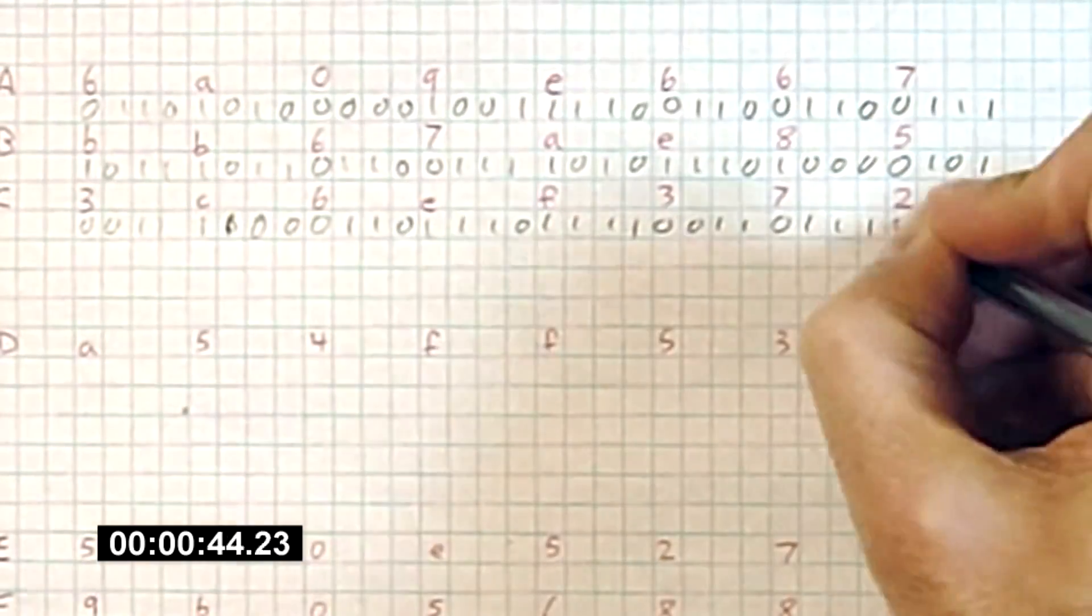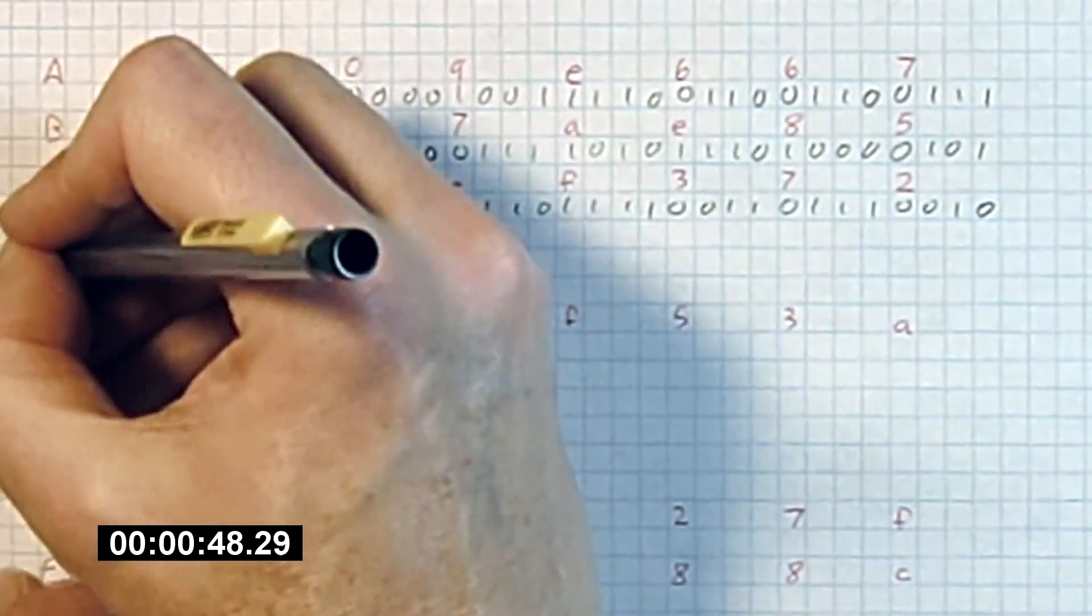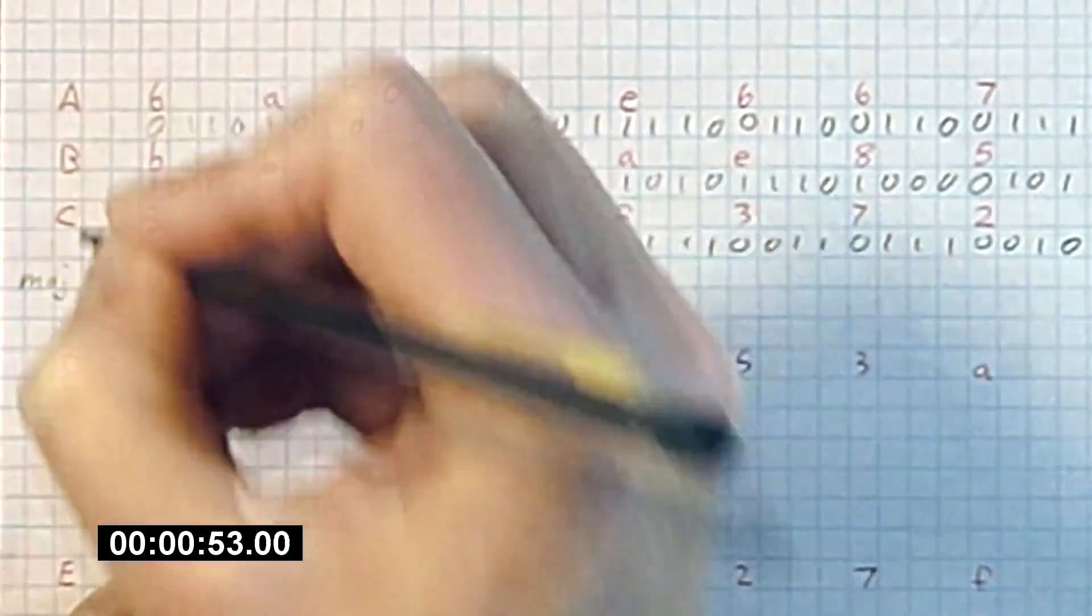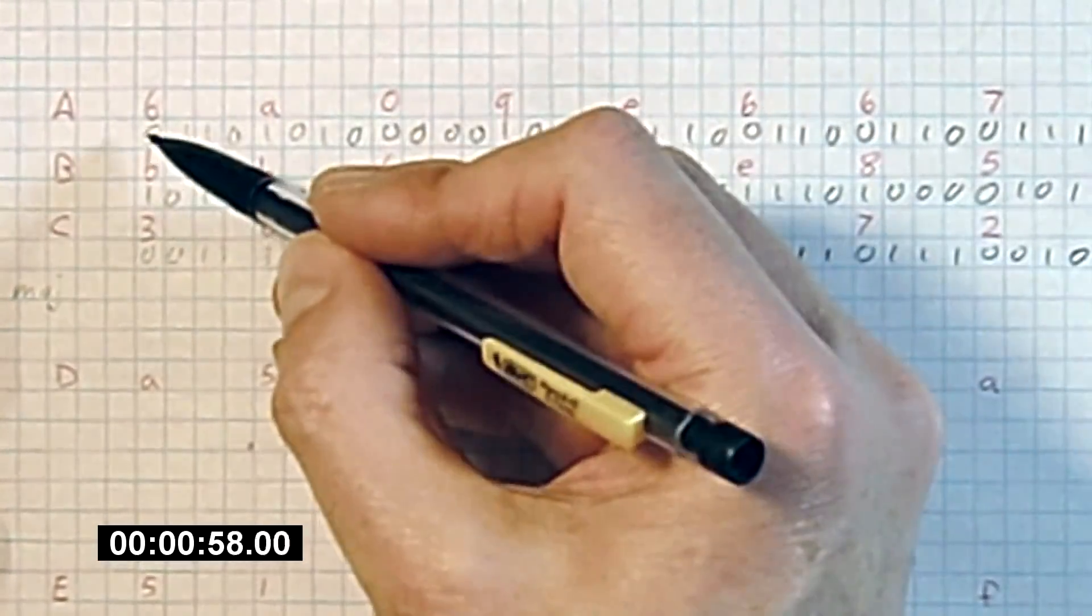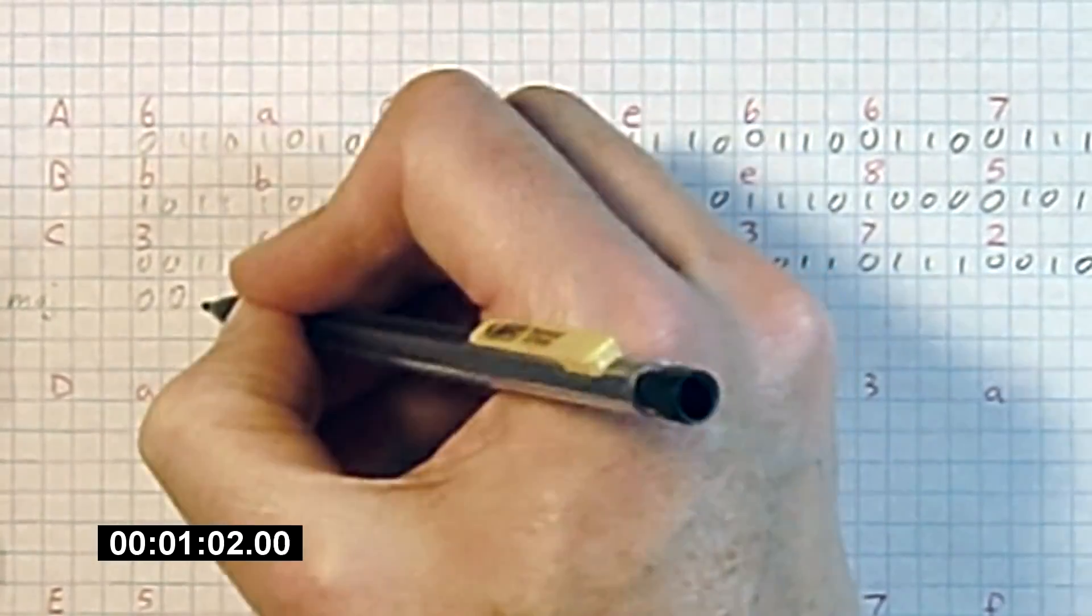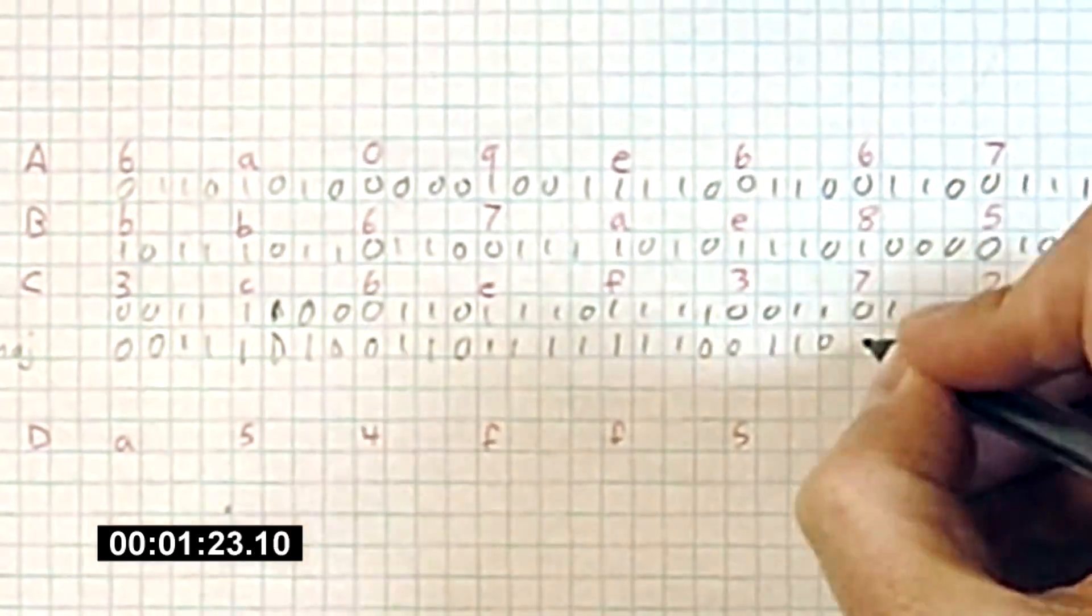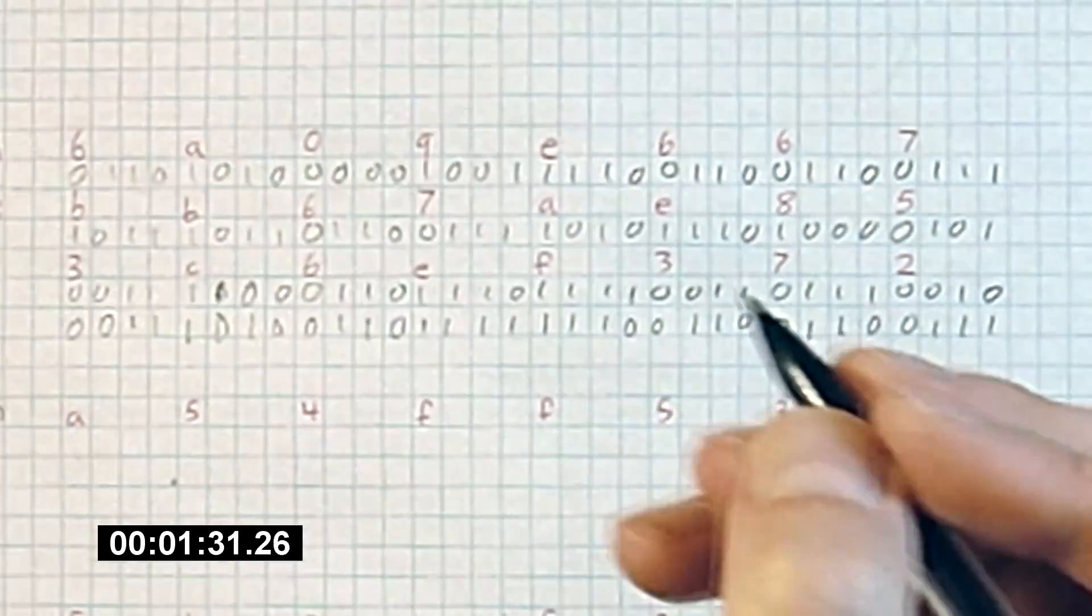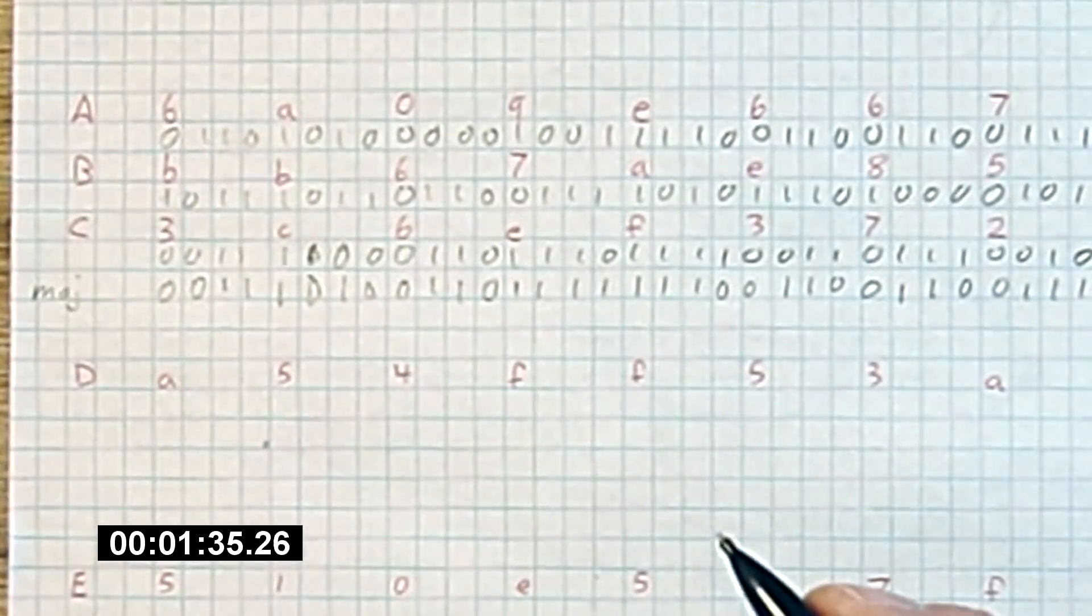Now for the first operation, we're going to compute the majority function on A, B, and C. What that means is simply we look at each of the three bits and see are there more zeros or ones. 0, 1, 0. There's more zeros. 1, 0, 0. More zeros. 1, 1, 1. 1's win. 0, 1, 1. 1's win. Now what this does is it mixes up A, B, and C in a nonlinear way, which makes it harder to break the hash function.